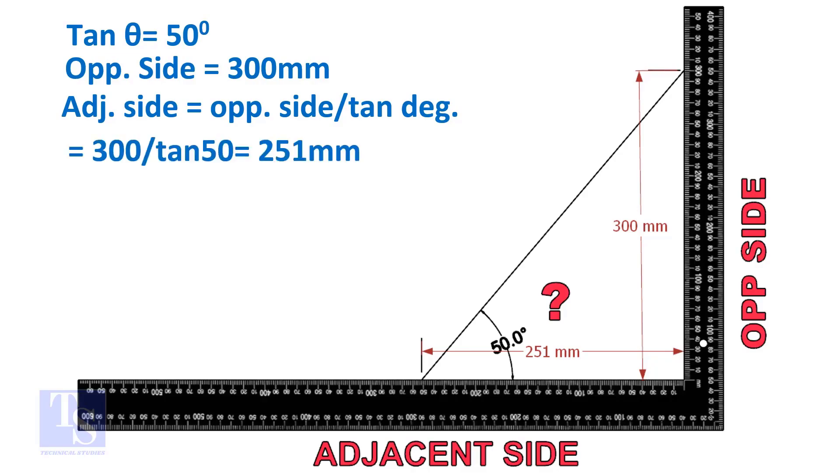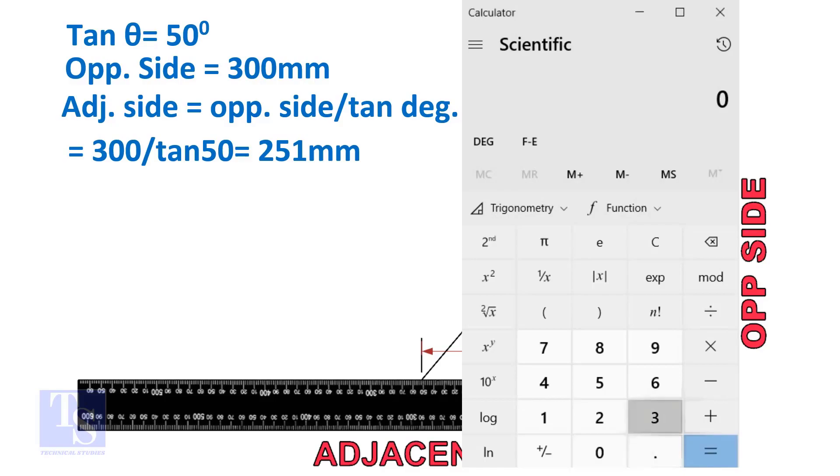Adjacent side is equal to 300 divided by TAN 50 degree. Let us calculate.